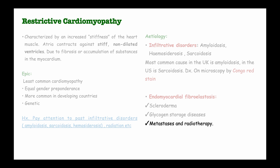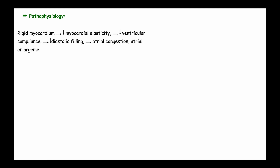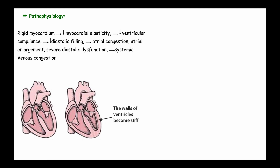The remaining causes of restrictive cardiomyopathy are unknown or idiopathic. Regarding pathophysiology, there is stiffness or rigidity of the heart muscles, caused by fibrosis or accumulation of substances. The accumulation of substances in the myocardium leads to decreased elasticity of the myocardium and reduced compliance of the ventricles.